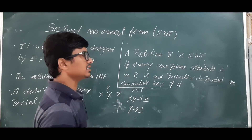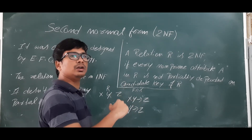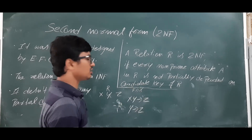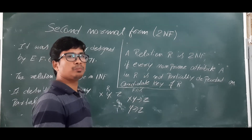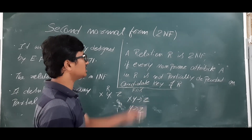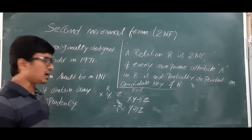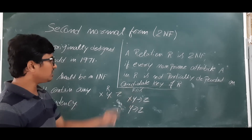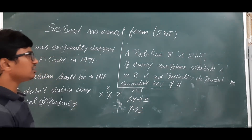A partial dependency occurs when a non-key attribute depends on only a part of the candidate key. I will also explain what a prime attribute and a non-prime attribute are with definitions and examples. Let's say I have taken a relation R which consists of three attributes X, Y, Z, and we are given the set of FDs: XY determines Z, and Y determines Z.